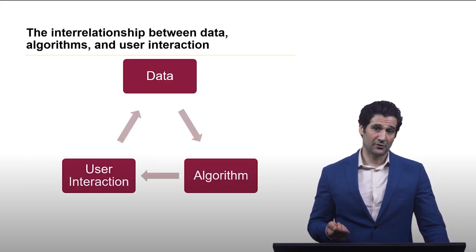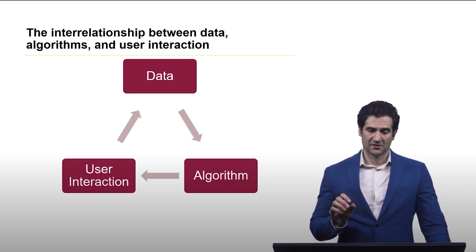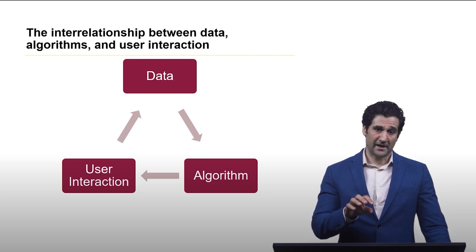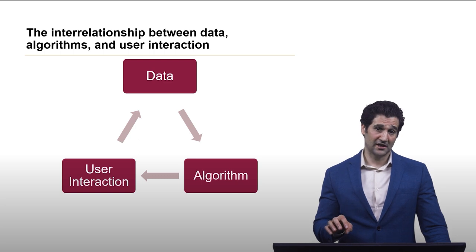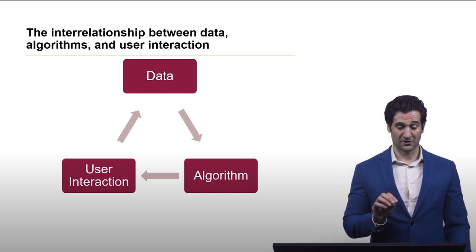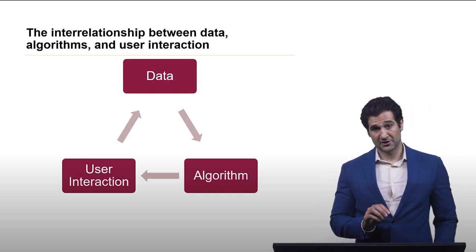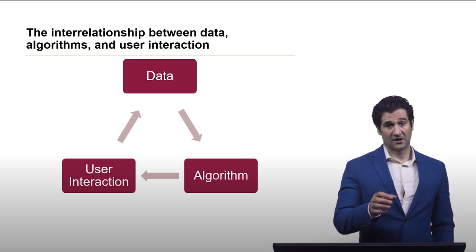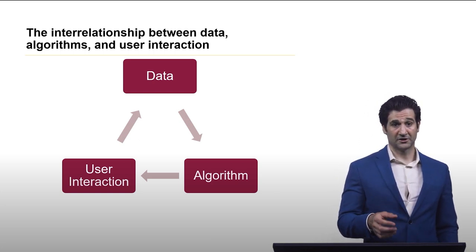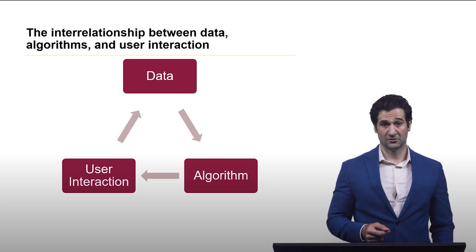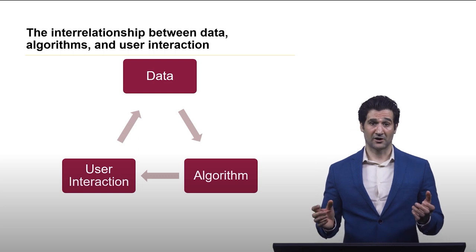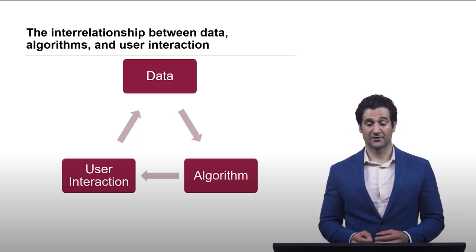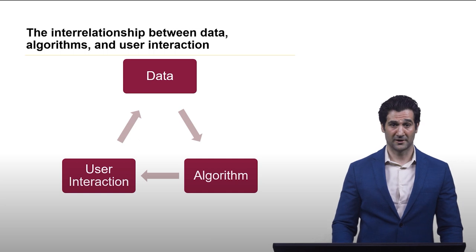So how to think about this? We look at this as there's a relationship between data, algorithms, and user interaction. If there's bias in the data, that will lead to a biased algorithm result. However, an algorithm itself can also provide a biased result. And the user's interaction in creating data could complete the circle and lead to bias within the data. The interactions among these three things are what can lead to different sources of bias, and that's what we'll discuss further in this module.